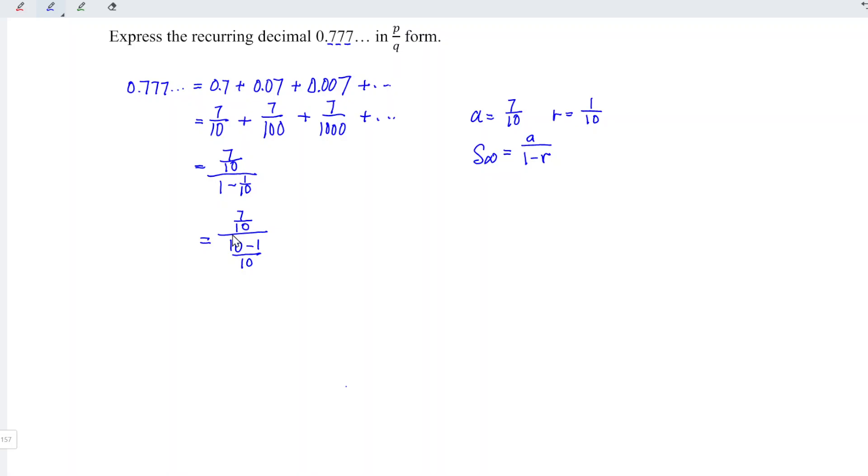We have A over B divided by C over D. So we should cancel the similar term for B and D. So we are left with 7 divided by 10 minus 1 is equal to 9.